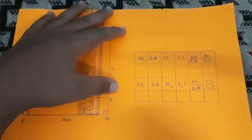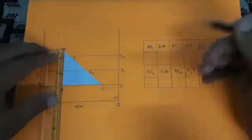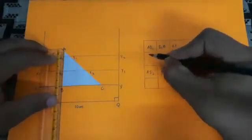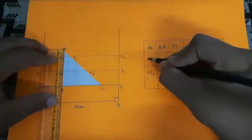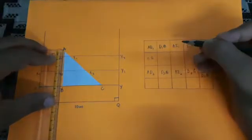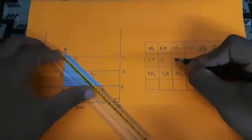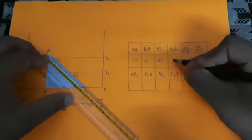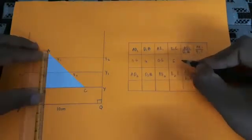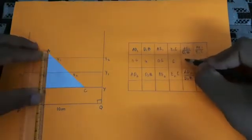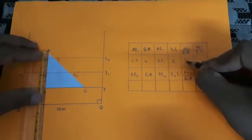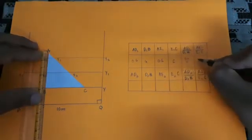Measure the lengths of the line segments AD1, D1B, AE1, E1C, AD2, D2B, AE2, and E2C and record them in the table.